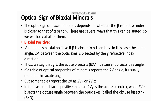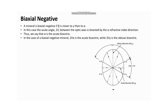For biaxial negative minerals, beta is closer to gamma than to alpha. In this case, the acute angle is bisected by alpha — alpha is the acute bisectrix — and gamma is the obtuse bisectrix. Thank you for joining us today. Please don't forget to like, share, and comment on our YouTube content so that we keep growing. Until next time, cheers.